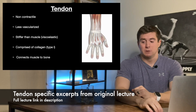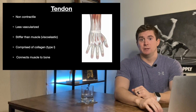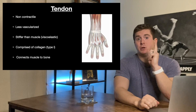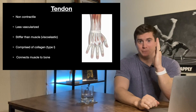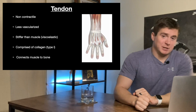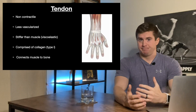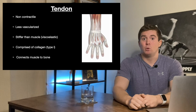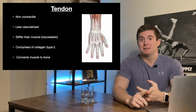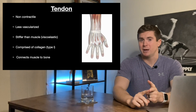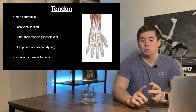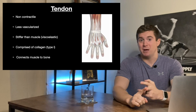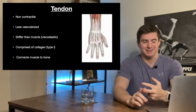Tendons are non-contractile. The muscle contracts, the tendon distributes the force from the muscle to the bone and then the bone moves. Tendons are less vascularized — they don't have as good of blood flow. Therefore, they take more time to adapt and also more time to heal if there is a tendinopathic injury or pain in the tendon.